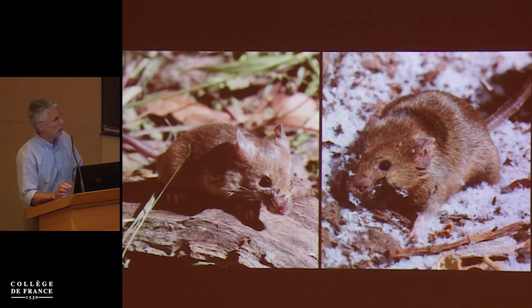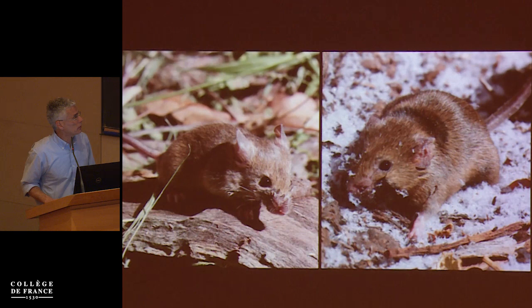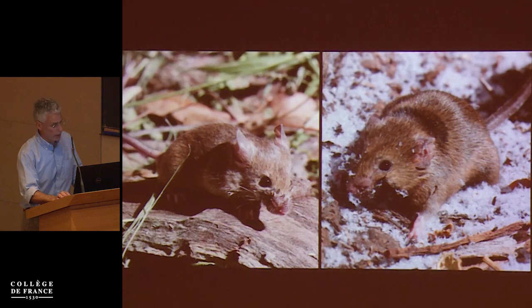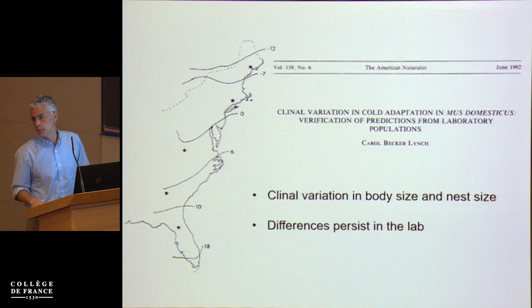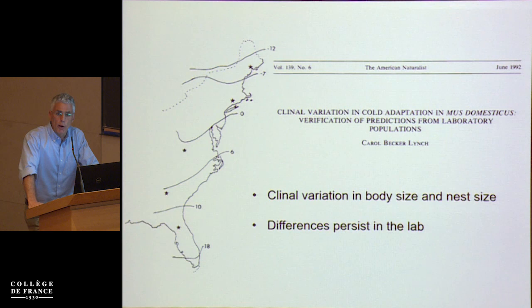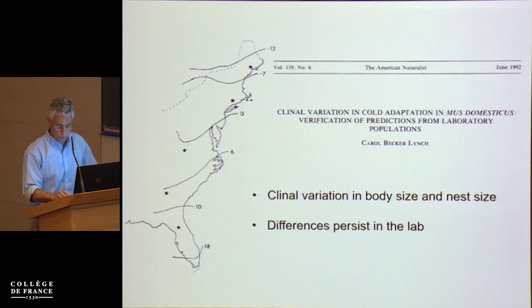Mice that land in upstate New York are experiencing very different selection pressures than mice that land in Brazil. Brazil is probably warmer than the ancestral range and less seasonal; the very northern reaches are colder. So there's probably been selection in both directions — not just for adaptation to cold. This work was also motivated by Carol Lynch's work in the late 1980s and early 90s. She collected mice along the eastern coast of North America and documented clinal variation in body size and nest-building behavior, and showed that these differences persist in the lab. She was correct on both counts.